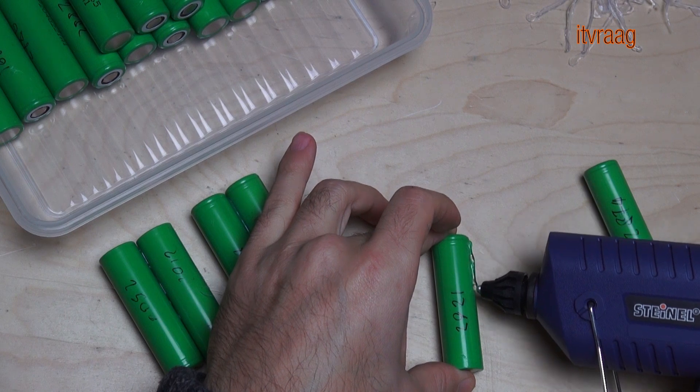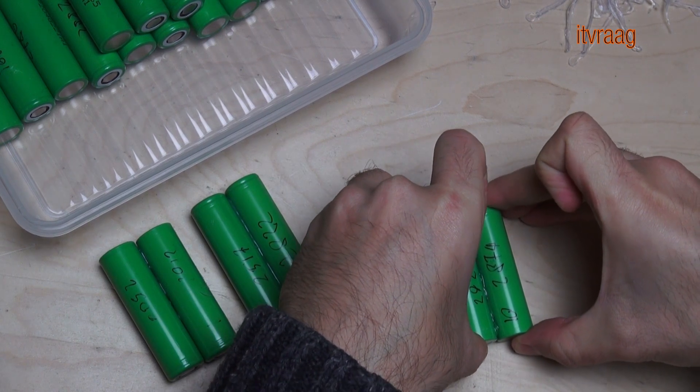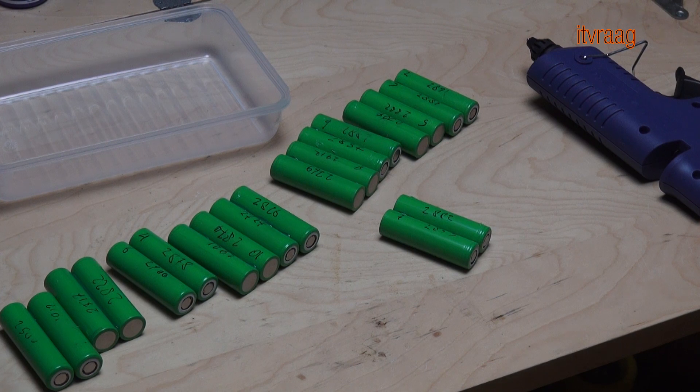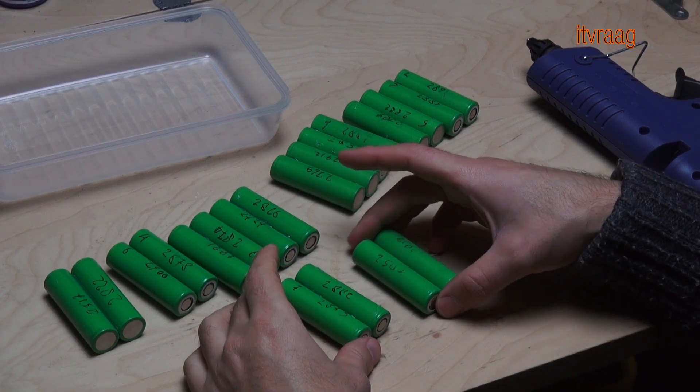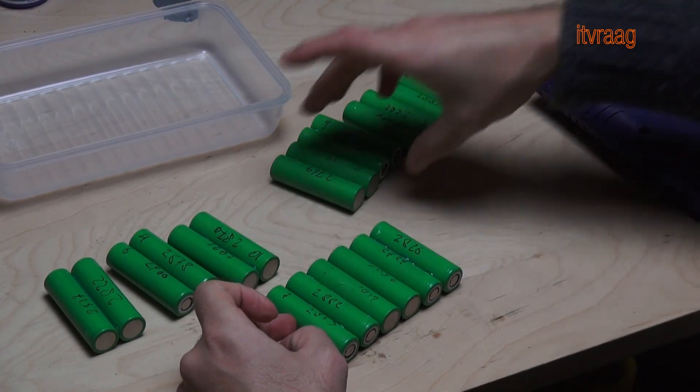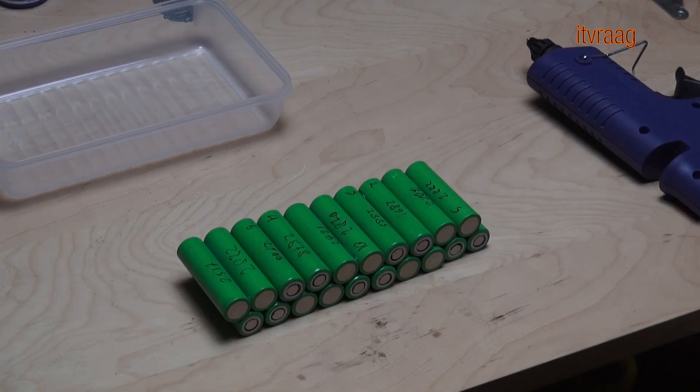First I glued the cells in pairs for the parallel connection. And then I glued them all together in series. This way I can keep the positive and the negative ends close to each other for better layout.